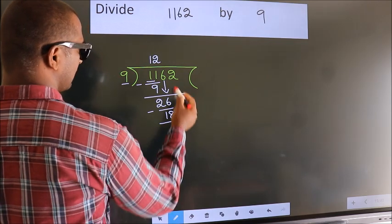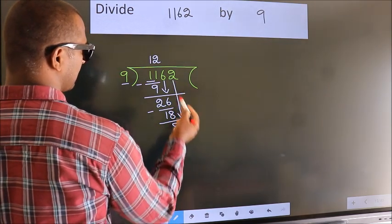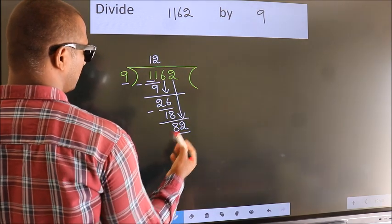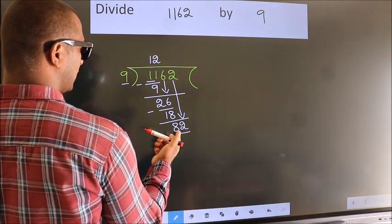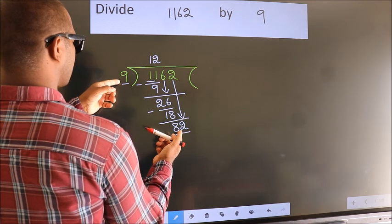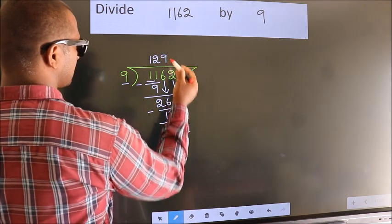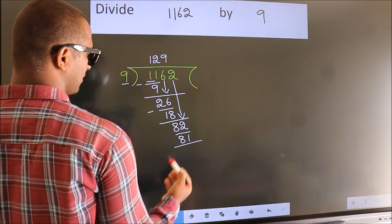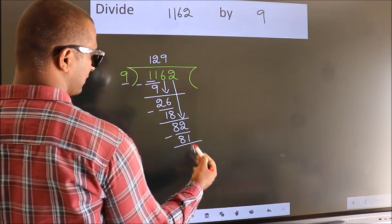After this, bring down the beside number. So 2 down, making 82. A number close to 82 in the 9 table is 9 times 9 equals 81. Now we subtract. We get 1.